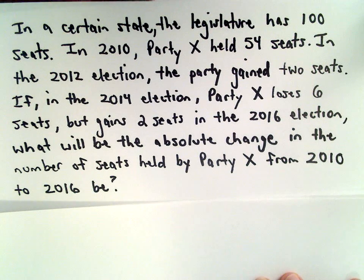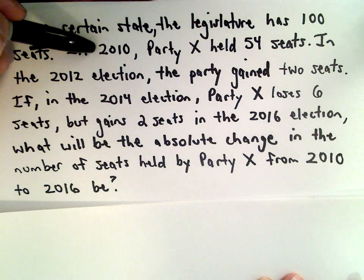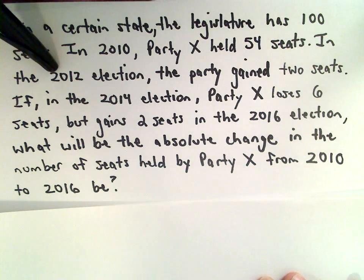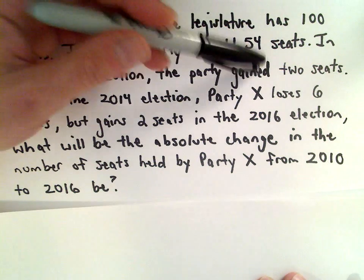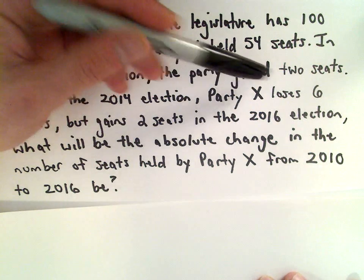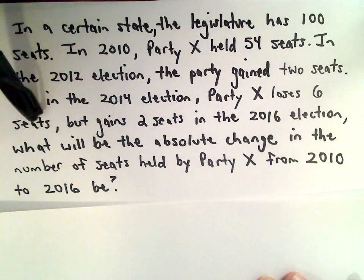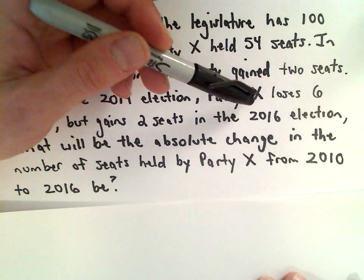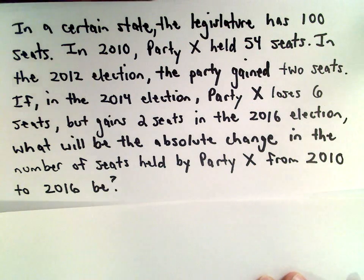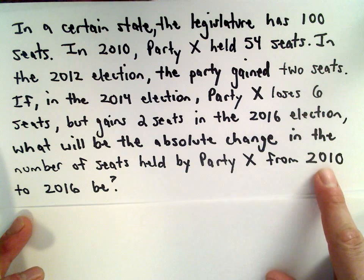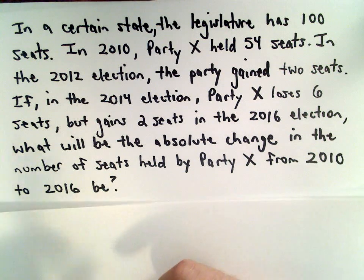In a certain state, the legislature has 100 seats. In 2010, Party X held 54 of those seats. In the 2012 election, the party gained two seats. In the 2014 election, they went on to lose six of those seats, but then they also gained two other seats in the 2016 election. We want to know what's the absolute change in the number of seats held by Party X from 2010 to 2016.